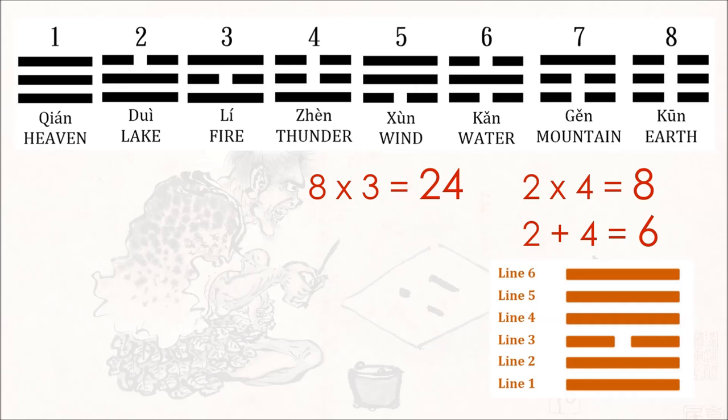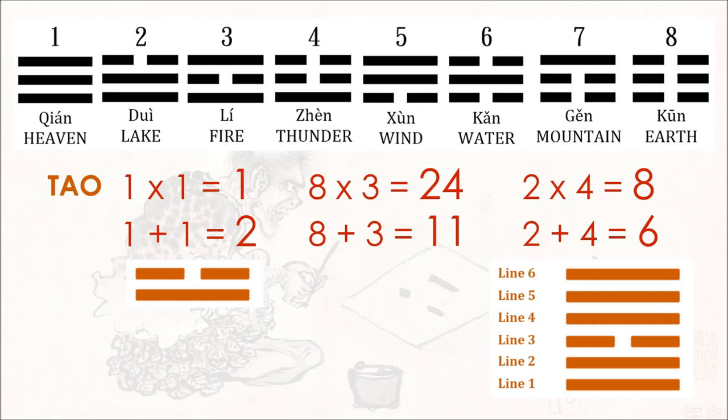Eight plus three is eleven — another mystical number — whereby one multiplied by one is a return to one, the Tao. And one plus one is the two of the binary code born from the Tao that births the design of the universe. In a subsequent video, I'll walk you through the yarrow stalk divination method, and I hope when you watch that video, you'll pay attention to the ritualized mathematical synchronicities and how principles of mathematics and magic intersect.